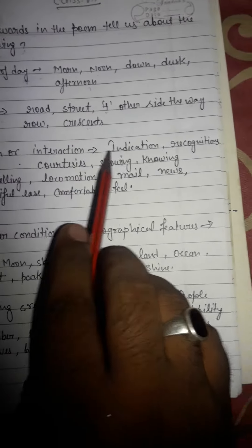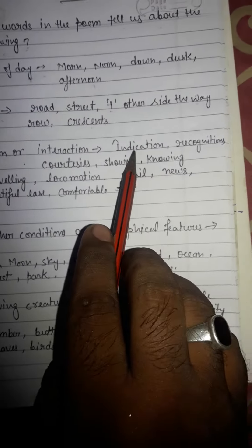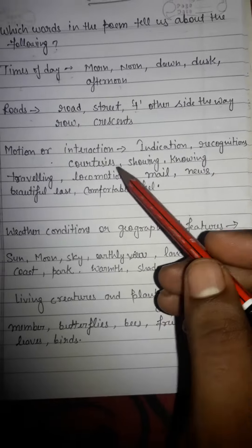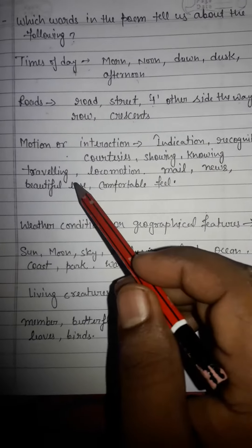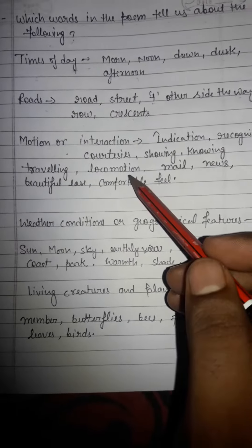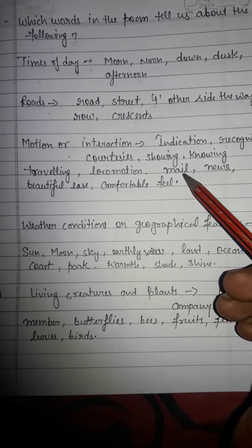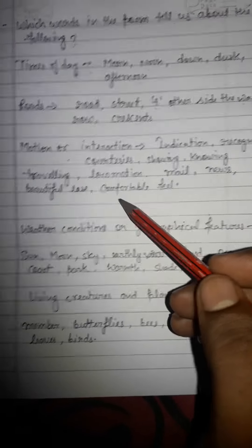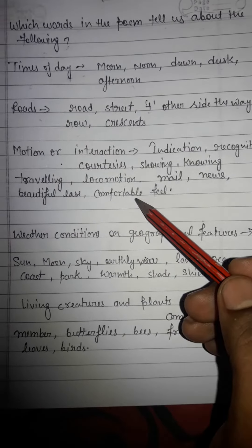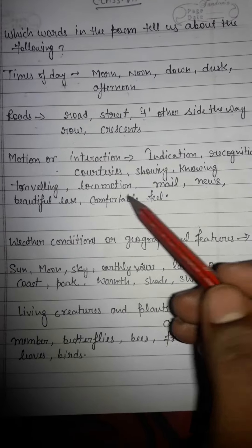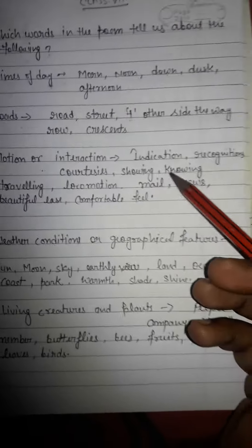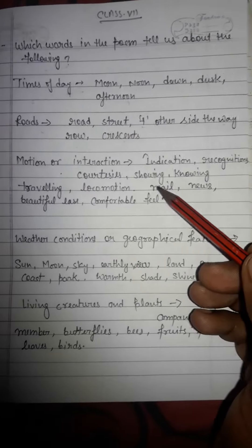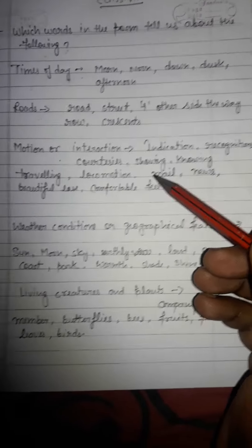Motions or interactions: indications, recognitions, courtesies, showing, knowing, travelling, locomotions, mail, news, beautiful ease, comfortable feel — these things are motions or interactions. These words are used in the poem, which you will find when you read the poem.